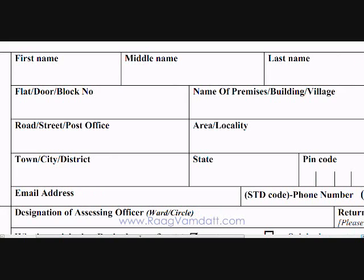The first section is about personal details. Write your name and your full address including the pin code. Write your email address if you have one and mention your phone number along with your STD code.